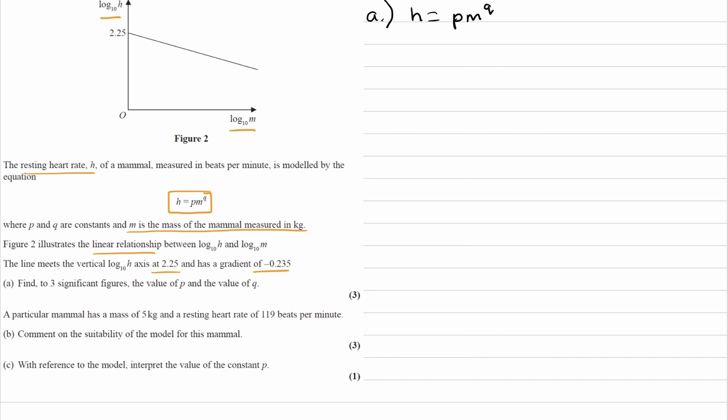So then what I would do is I would take logs of both sides of that equation. So log to the base 10 of h is equal to log to the base 10 of p m to the power of q. I can then use the multiplication rule on the right-hand side to write this as, I'll change the order as well, log to the base 10 of m to the power of q plus log of p. And then we can use the power law to rewrite the right-hand side as q log m plus log p.